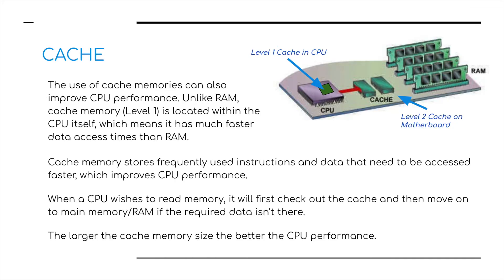Moving on to cache memory. We've talked a lot about RAM and secondary memory such as hard disks, SSDs, and HDDs, but now we'll talk about cache memory. The use of cache memory can improve CPU performance. There are two main levels of cache: level one cache that lives on the CPU, and level two cache that sometimes lives on the RAM but generally lives on the motherboard. Unlike RAM, level one cache is located within the CPU itself, which means it has much faster data access time. Cache memory stores frequently used instructions and data that needs to be accessed faster. When a CPU needs to read memory, it will first check the cache and then move on to the main memory — the RAM — if the required data isn't there.